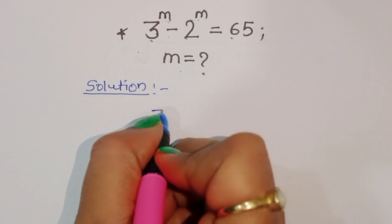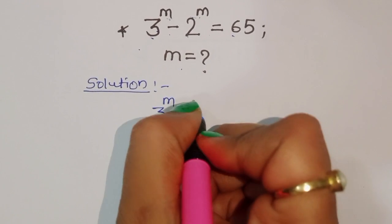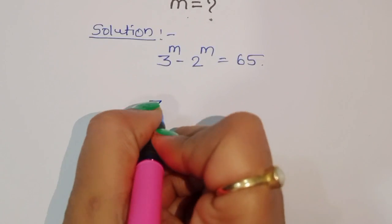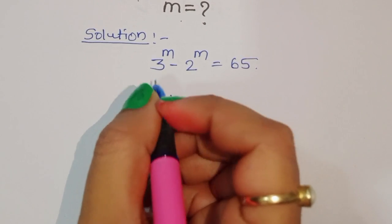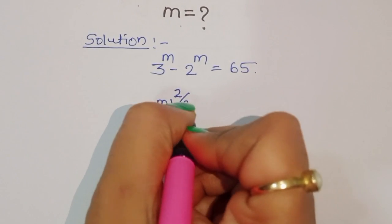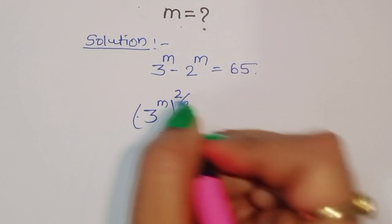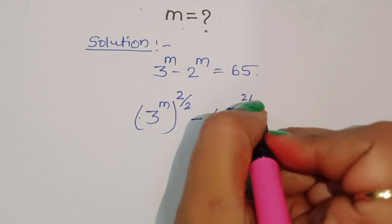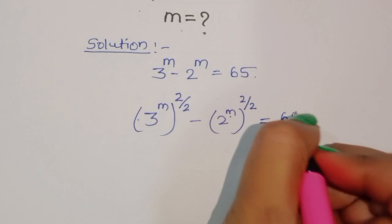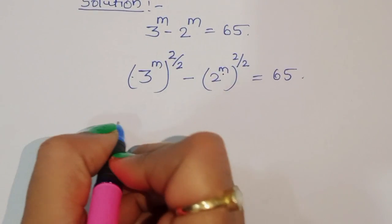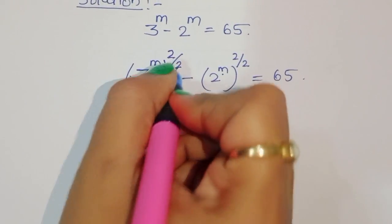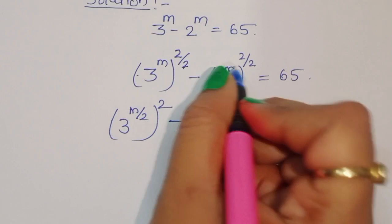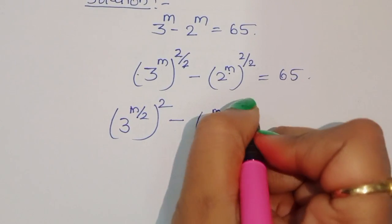First, what is given: 3 power m minus 2 power m is equal to 65. Now we can write 3 power m as 3 power (2 by 2) — taking 2 by 2 in the power, so 2 by 2 means that is 1, value is same. Minus 2 power m, again with power 2 by 2, so 2 cancels — value is same — is equal to 65.